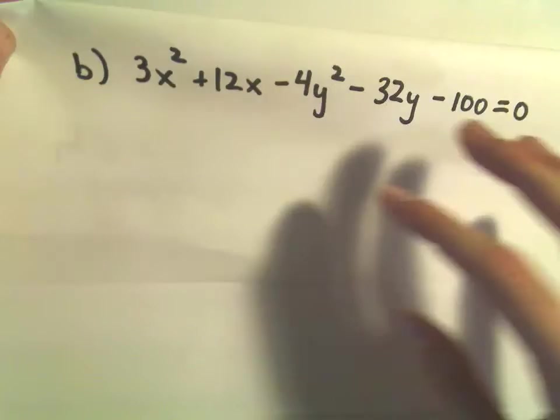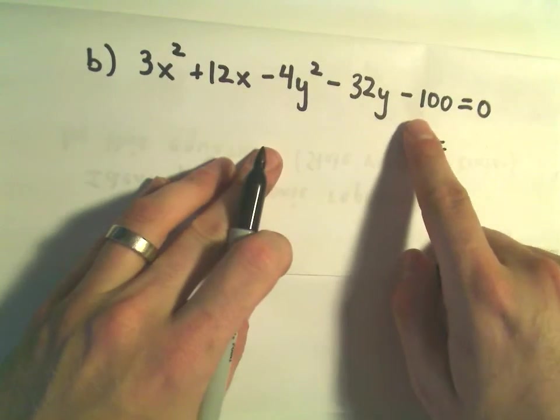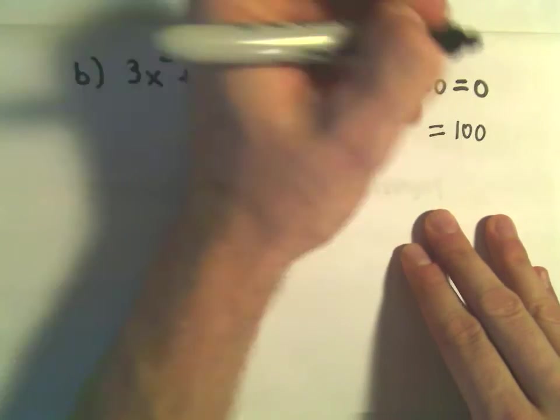So to do these, you're just basically completing the square. I'm going to start off by adding 100 to both sides, so that will give me positive 100 on the right.